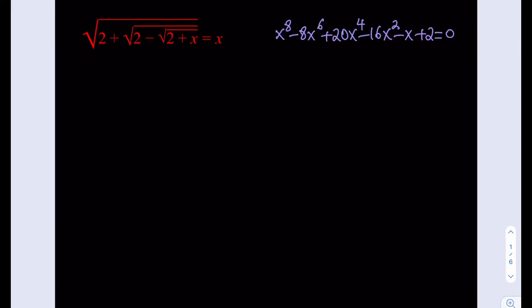Hello everyone. This is challenging math problem number 9. We have a radical equation and we need to solve for x. The equation on the right hand side, if you go ahead and square both sides and keep doing it, you're going to be getting an 8th degree equation — and good luck solving that. So we're going to be using a different approach here.